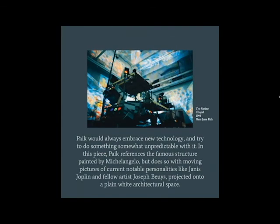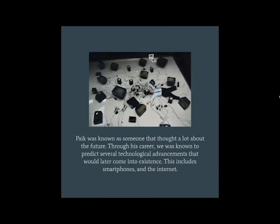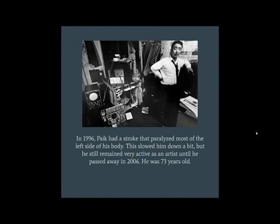Paik would always embrace new technology and try to do something somewhat unpredictable with it. In this piece, Paik references the famous structure painted by Michelangelo, but does so with moving pictures of current notable personalities like Janis Joplin and fellow artist Joseph Beuys projected onto a plain white architectural space. Paik was known as someone who thought a lot about the future, and he was known to predict several technological advancements, including smartphones and the internet. In 1996, Paik had a stroke that paralyzed most of the left side of his body, but he still remained active as an artist until he passed away in 2006 at age 73.